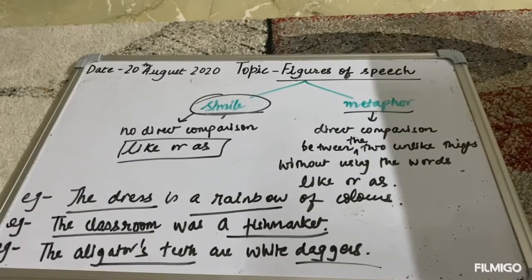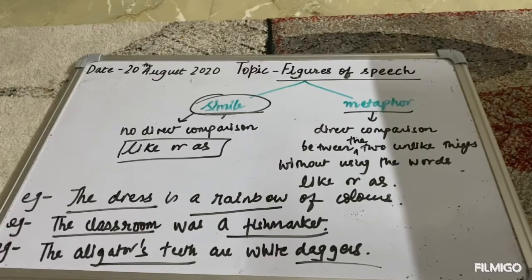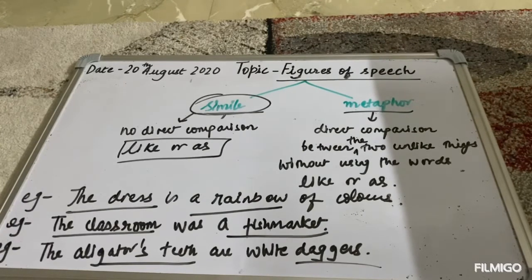Children, go through this video lesson and make notes on it. Try to think about similes and metaphors that can be used for our camouflage poems. That's all for today. Thank you, have a nice day.